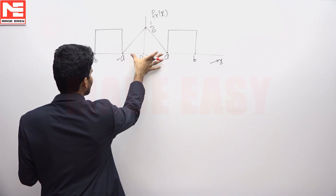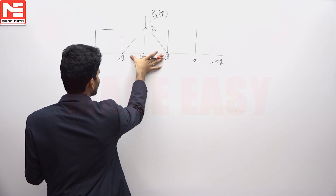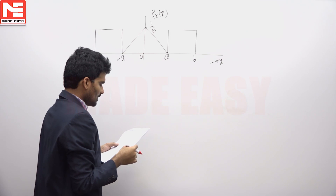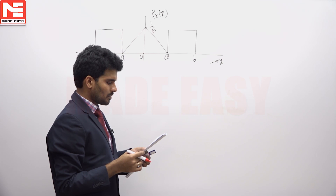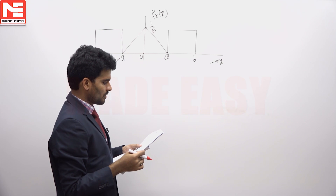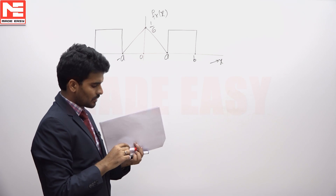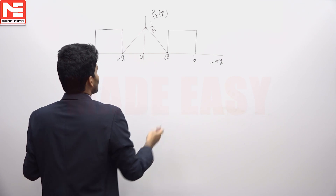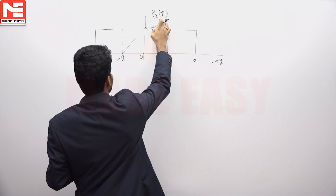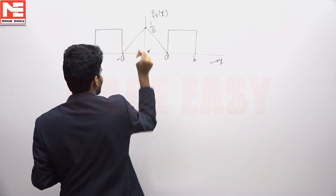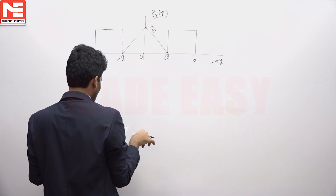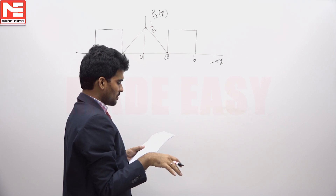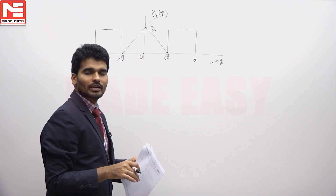3 levels means there is a 1st level, a 2nd quantization level, and a 3rd quantization level. The density function of x is given, and this x is quantized by the 3-level quantizer. The requirement is to achieve maximum entropy for the quantizer output.